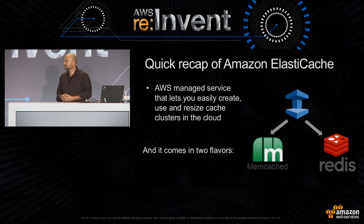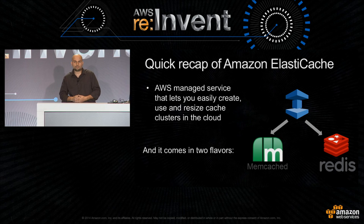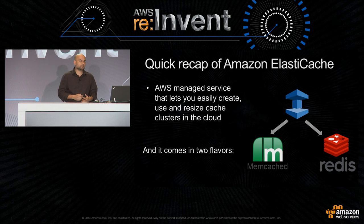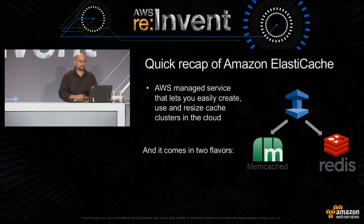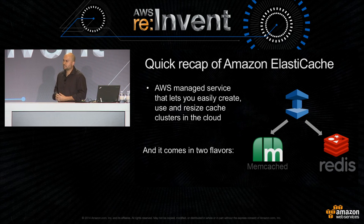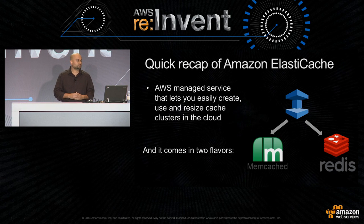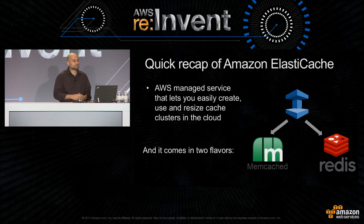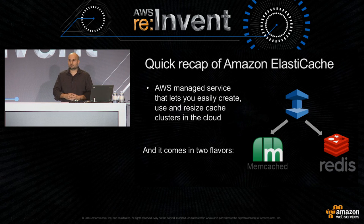ElastiCache specifically is a managed service that helps you do that. Everything that a managed service is expected to do is provided by ElastiCache. You pay for what you use. You provision as you need it. You size it, scale it, instantiate it, and you get it. For ElastiCache, we provide two flavors: Memcached and Redis.